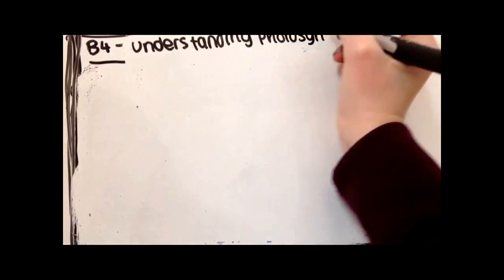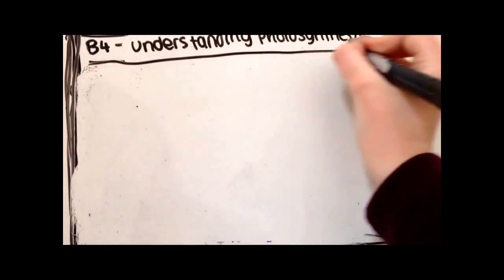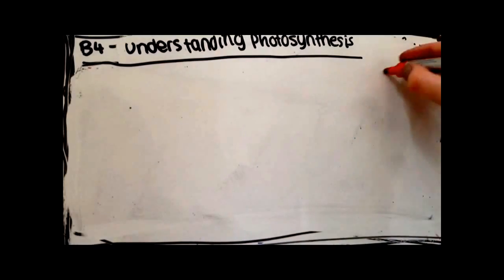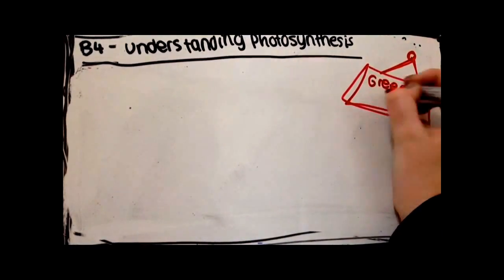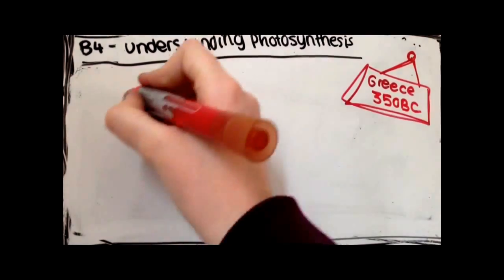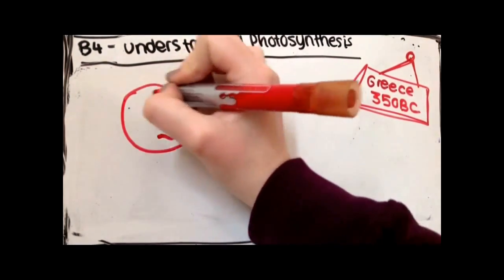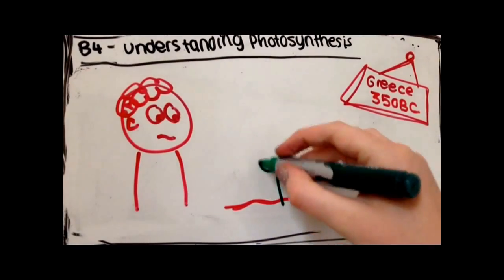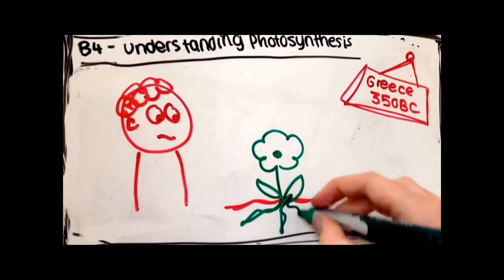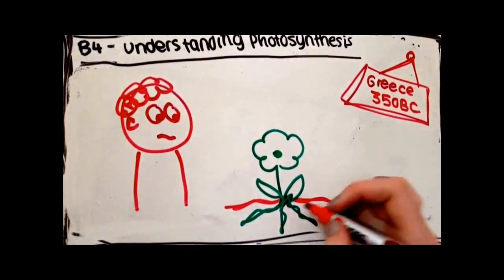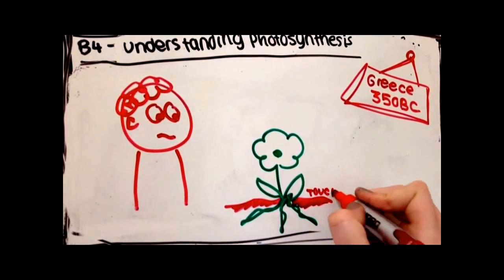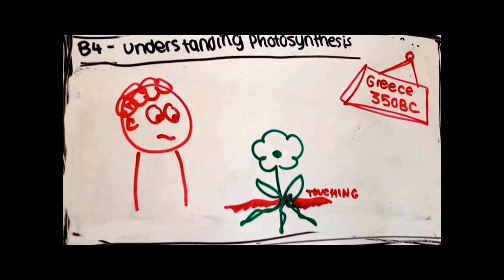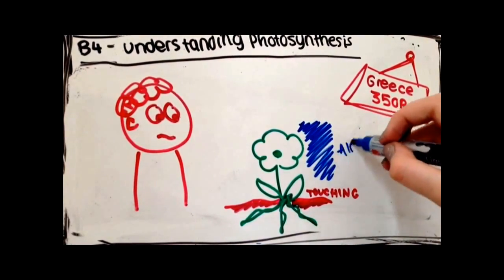Now onto understanding photosynthesis. Around 350 BC in ancient Greece, Greek scientists were studying plant growth. They observed plants and noticed that the only thing touching plants was soil. So they decided that plants must grow and gain mass by taking in minerals from the soil.